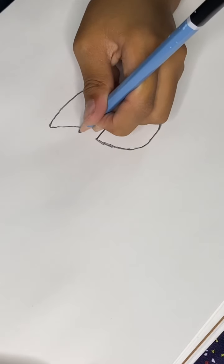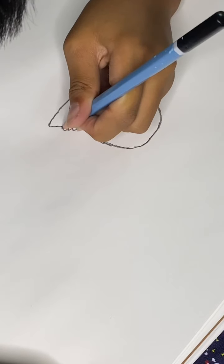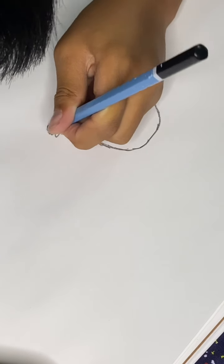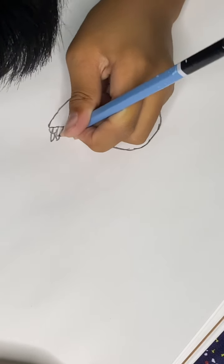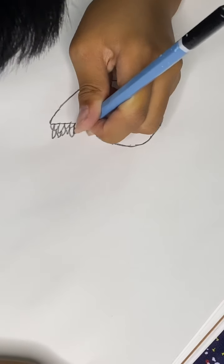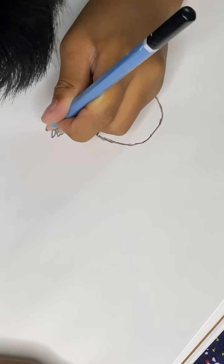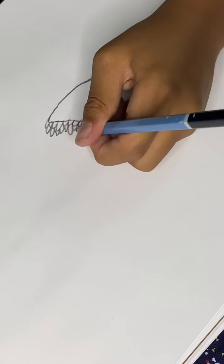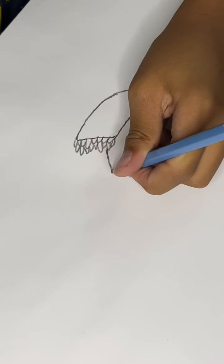Then you can draw little spikes. Well, not spikes because they're not really spikes, kind of like this. Not the tentacles.